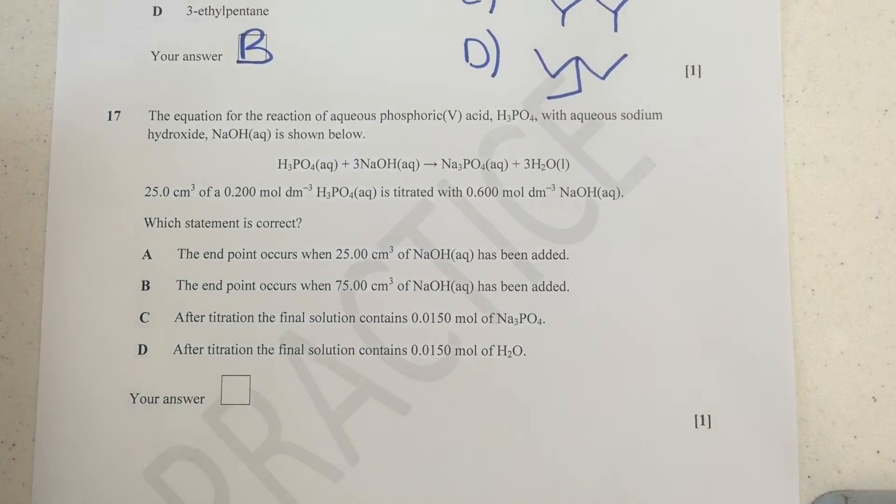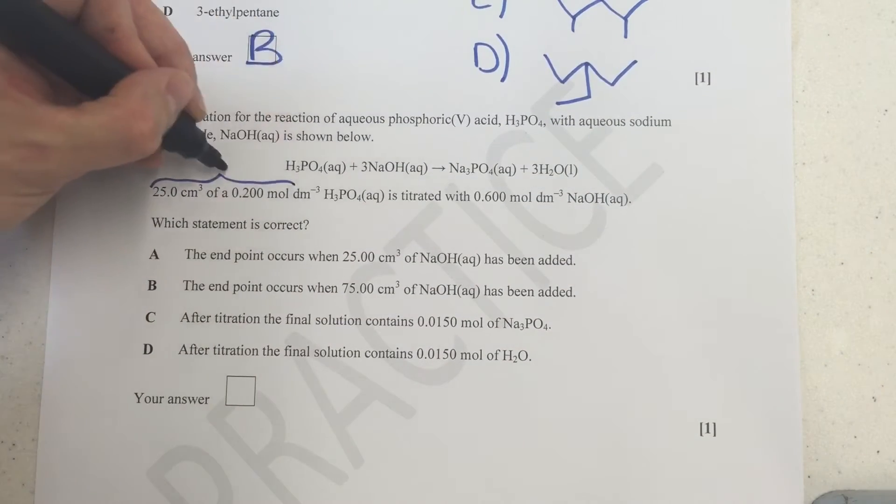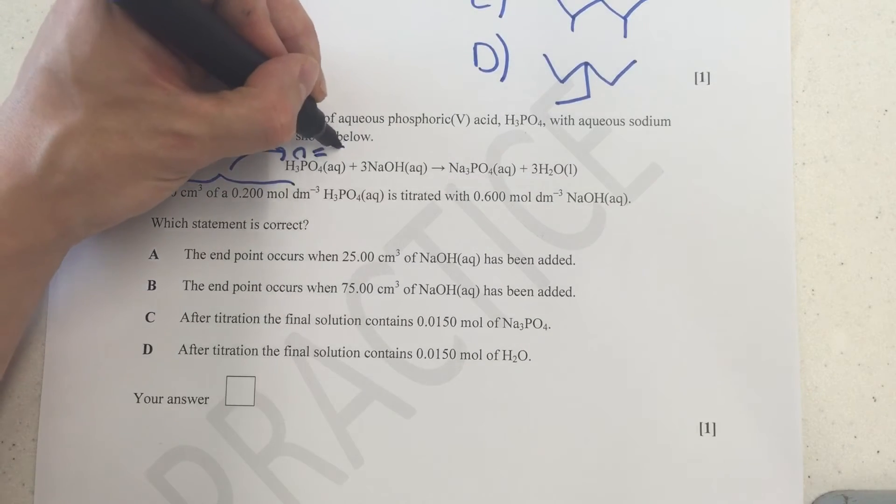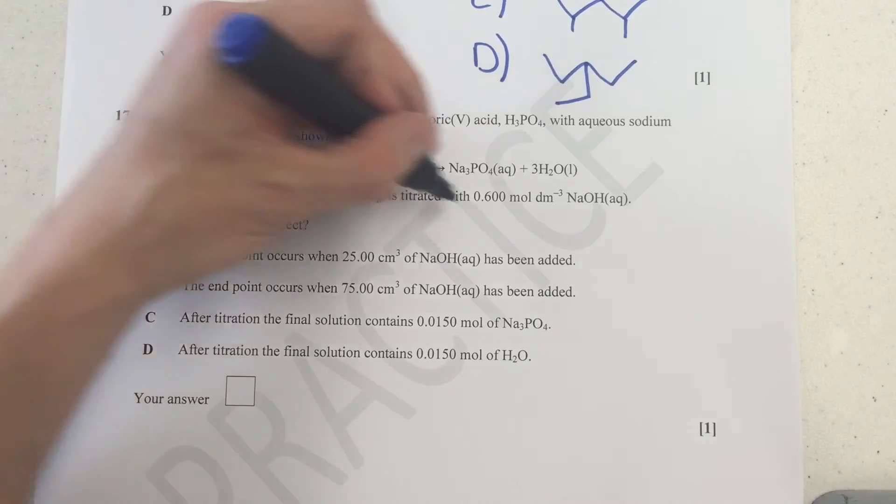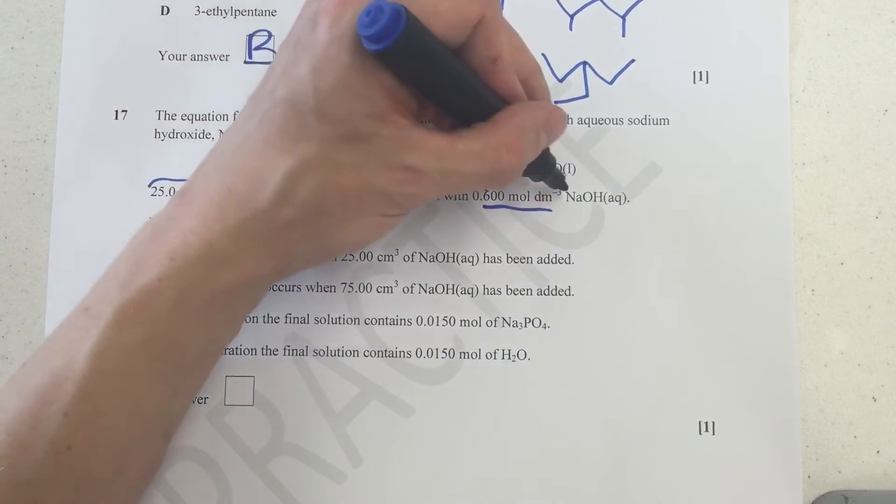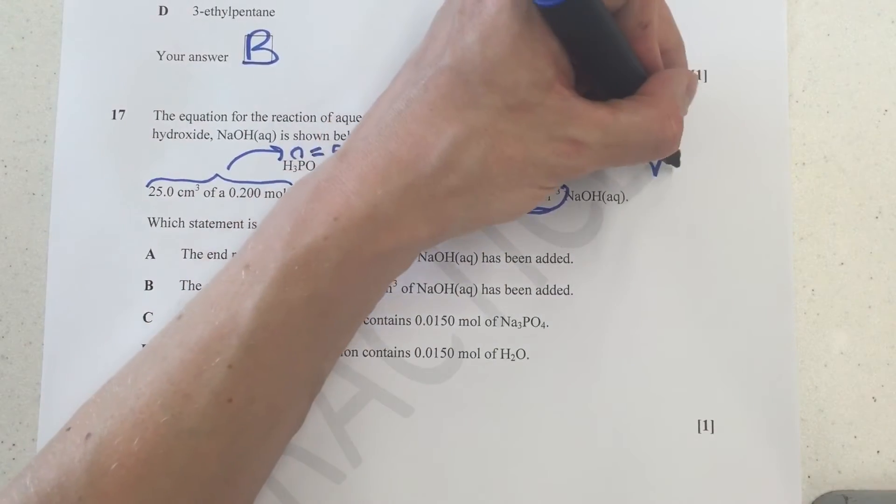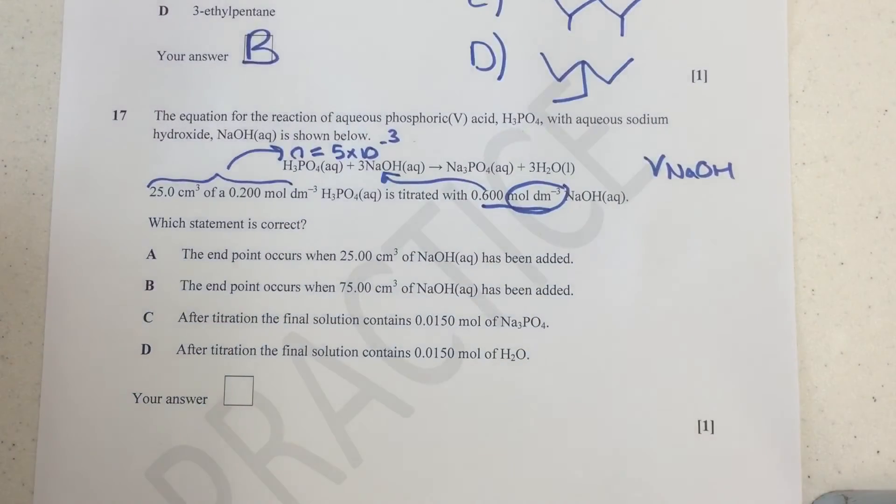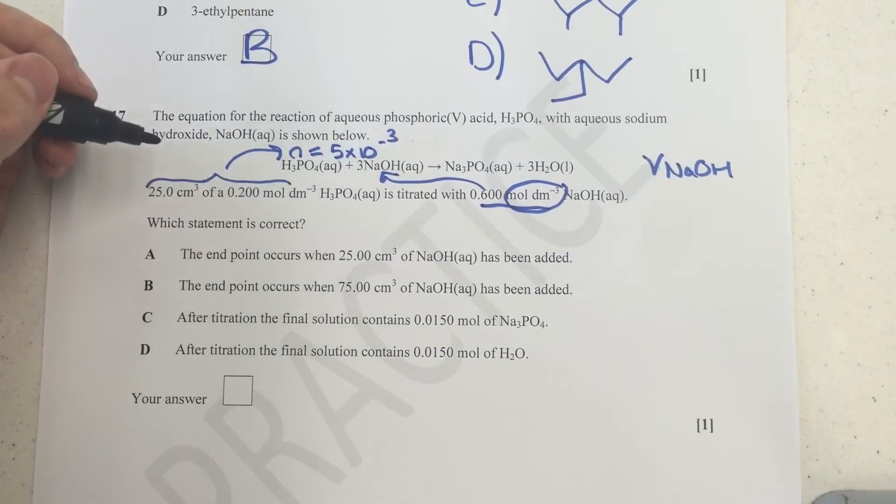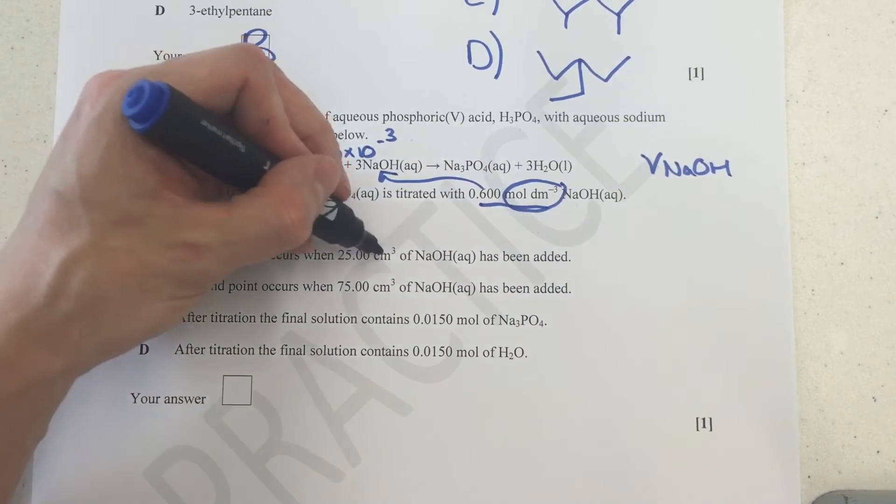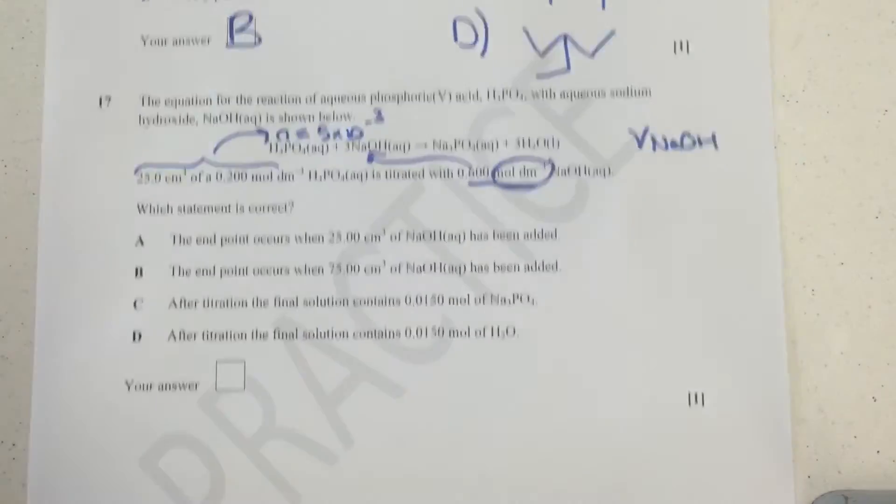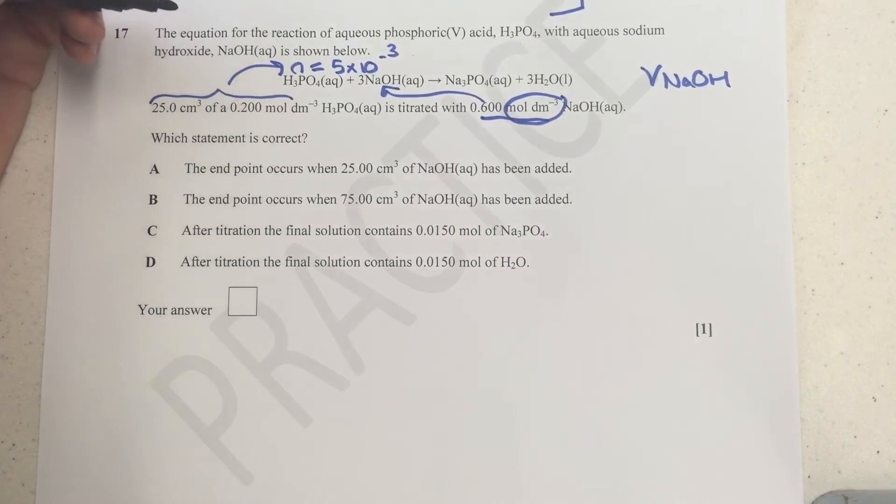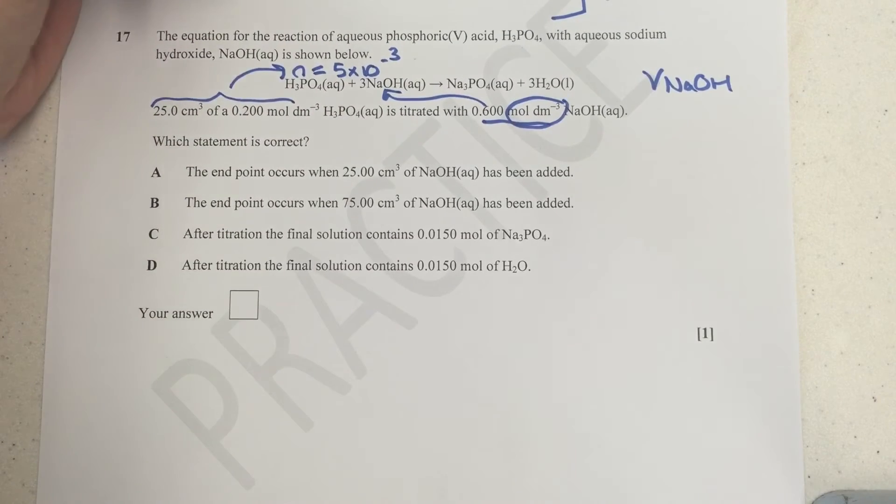Next one, we've got another mole calculation one. Just getting near the end of these now. The equation for the reaction of aqueous phosphoric acid with aqueous sodium hydroxide is shown below. So again, we've got lots of data for this one. Now instinctively here, I've got data for the H3PO4, so it allowed me to calculate the moles here of 5 times 10^-3. I've got a concentration for the sodium hydroxide, but I don't have a mole value yet. This is concentration. And the reason I don't have a mole is because I haven't been told a volume for the NaOH. Which statement is correct? So these two reacted together to make these. The endpoint occurs when 25 centimeters cubed of NaOH has been added. Well let's try and figure that out then.